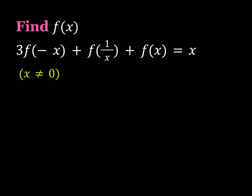Hello everyone. In this video we're going to be solving an interesting functional equation. We are given 3 times f of negative x plus f of 1 over x plus f of x equals x, where x does not equal 0 for obvious reasons, and we're supposed to find f of x. Now let's see how we can handle this problem.